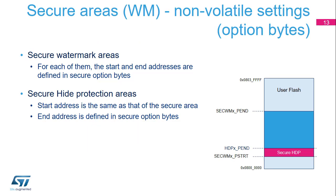When TrustZone security is active, a part of the flash memory can be protected against non-secure read and write accesses. Up to two different non-volatile secure areas can be defined by option bytes and can only be read or written by a secure access. In single bank mode, two areas can be selected with a page granularity. In dual bank mode, one area per bank can be selected with a page granularity.